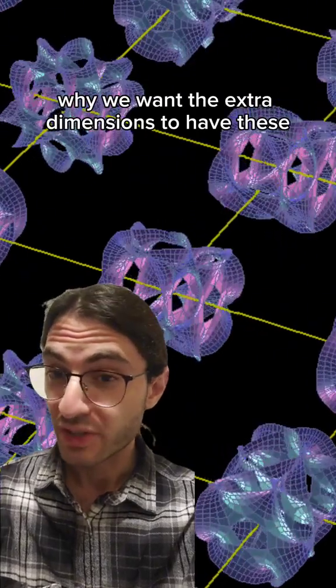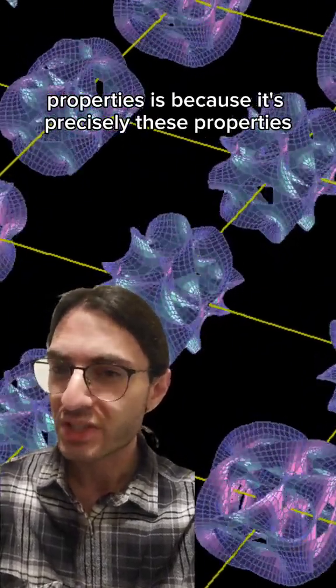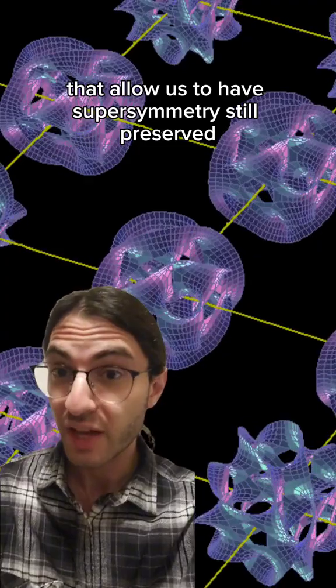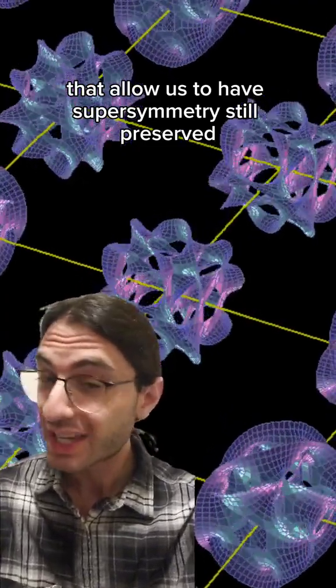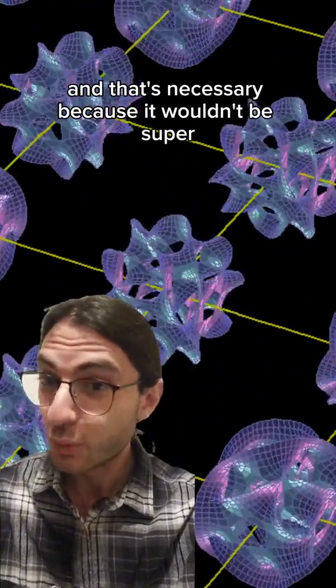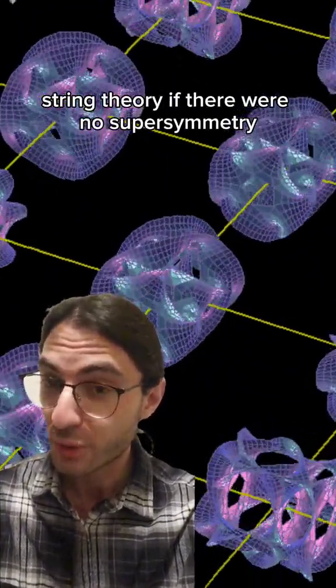And the reason why we want the extra dimensions to have these properties is because it's precisely these properties that allow us to have supersymmetry still preserved in our superstring theory. And that's necessary because it wouldn't be superstring theory if there were no supersymmetry.